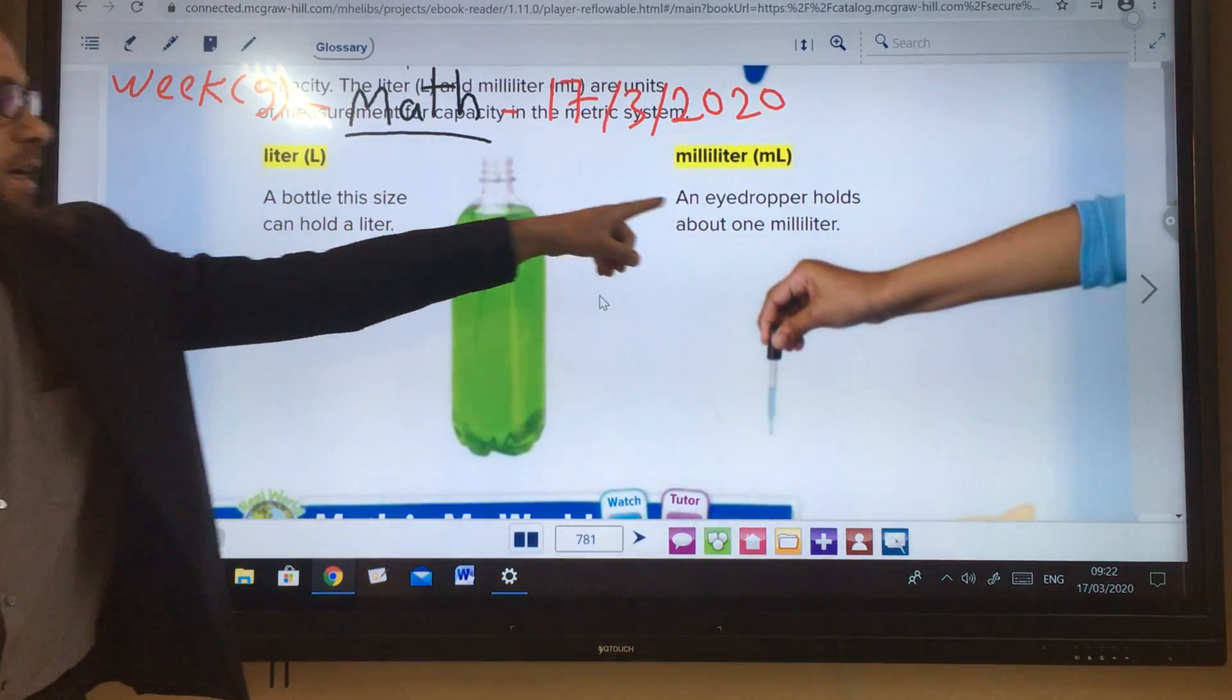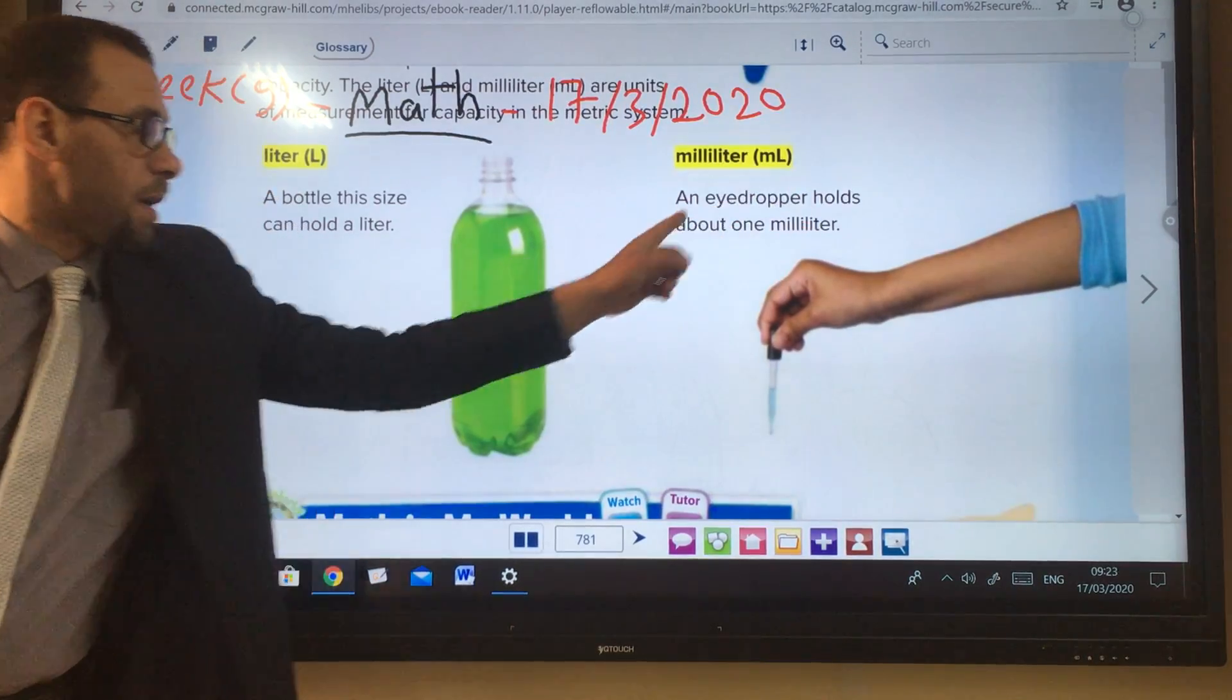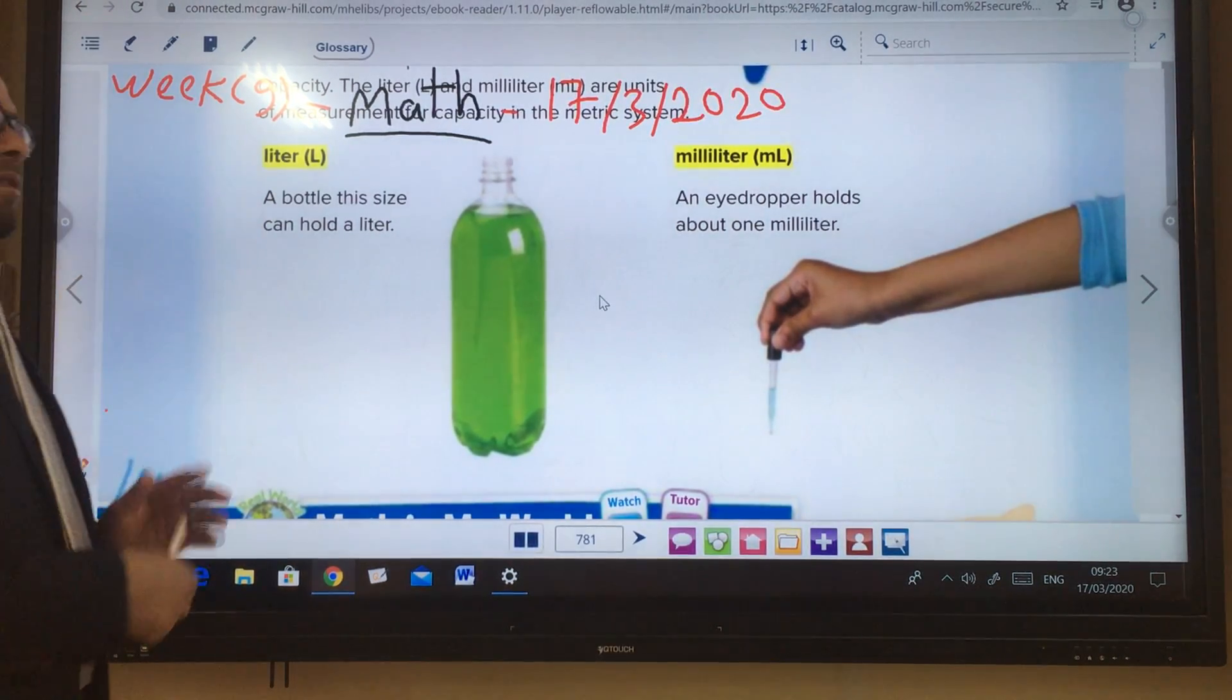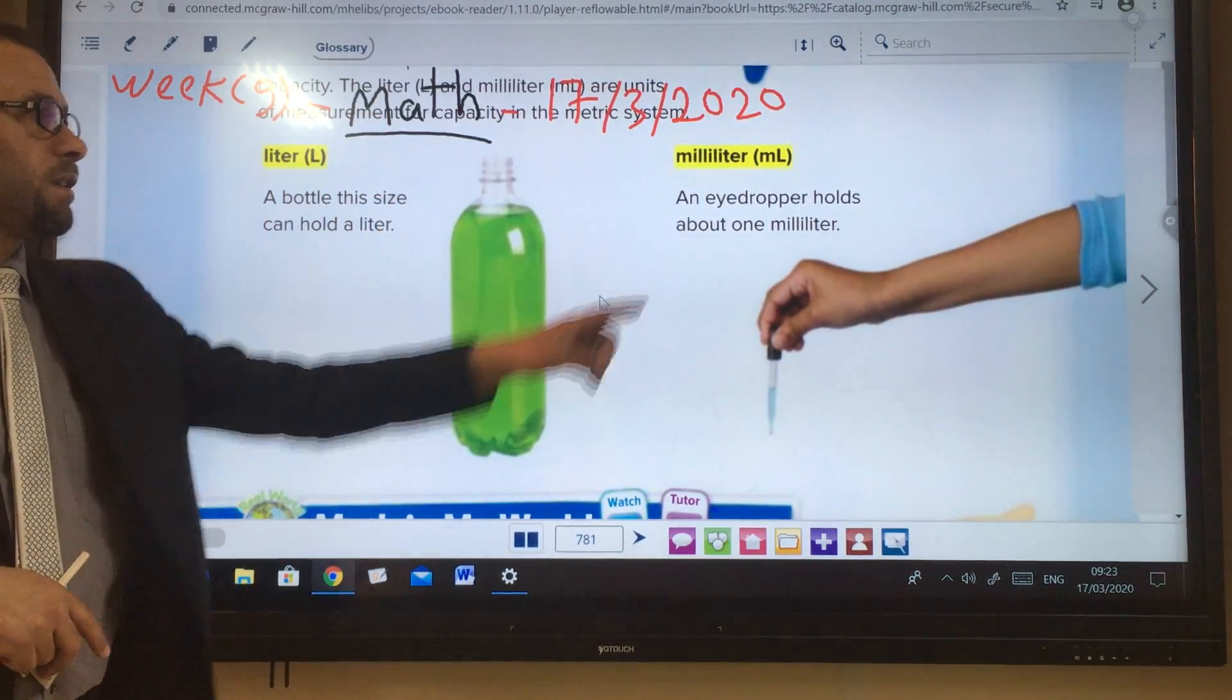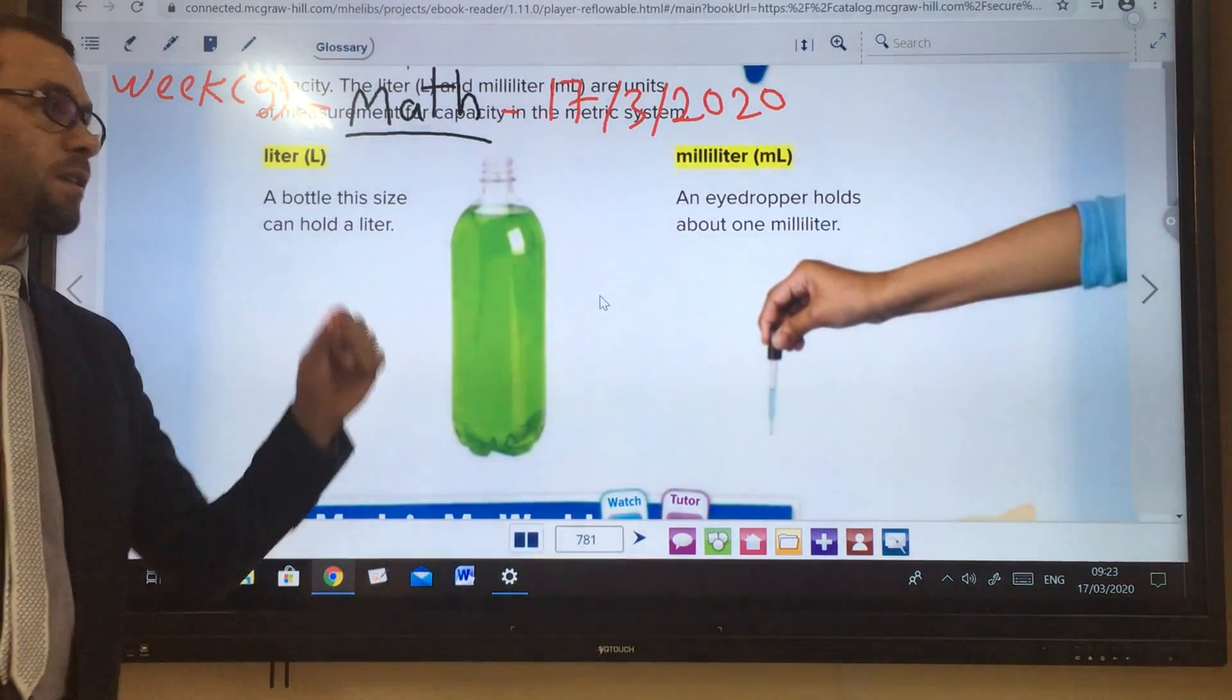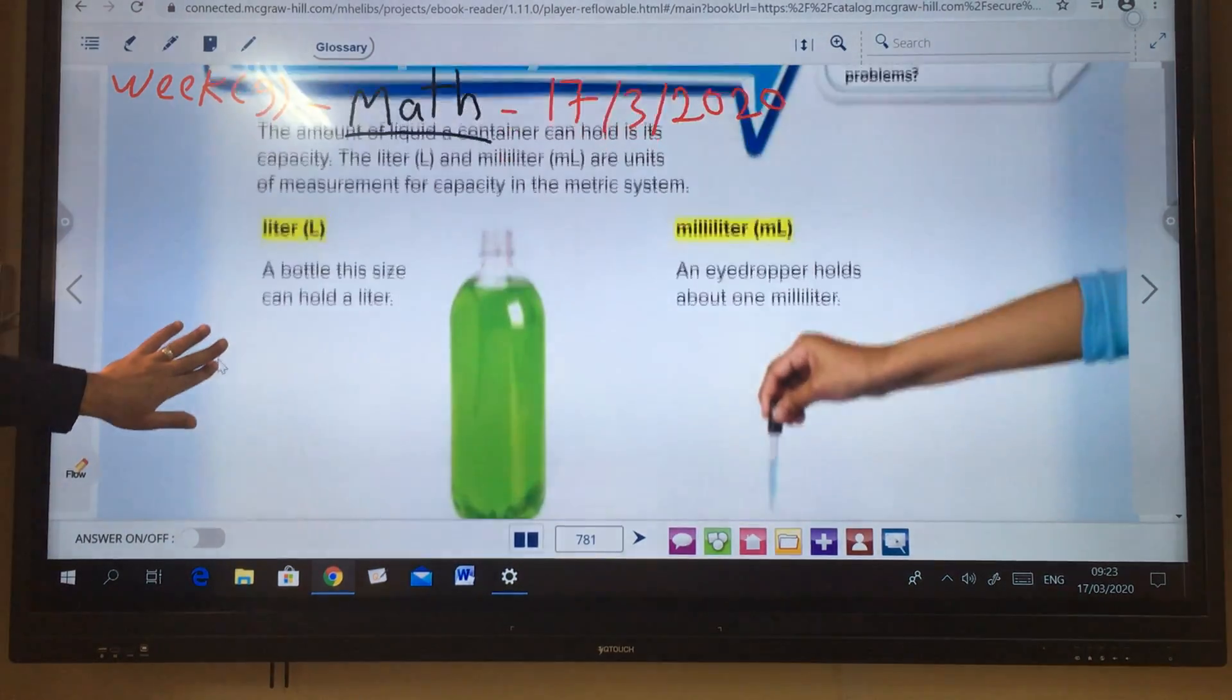As you see here, one drop holds about one milliliter. Here, a bottle this size can hold a liter. So we have two units of capacity: liter for big size and milliliter for very small size. We use it for medicine and drops like this.